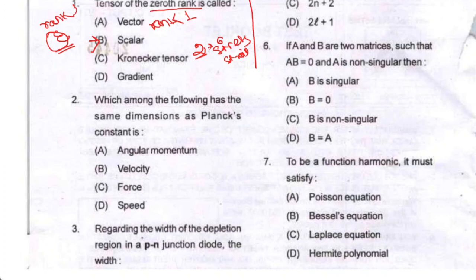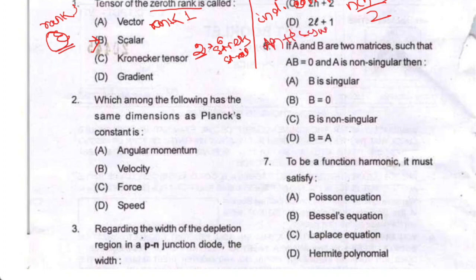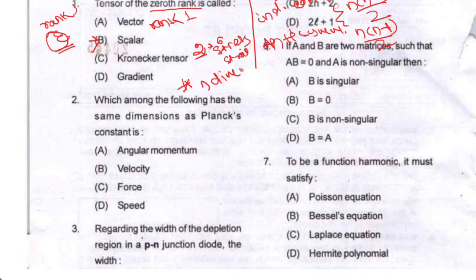For independent components of a symmetric tensor of n dimensions, the formula is n(n+1)/2. For an anti-symmetric tensor, it is n(n−1)/2. This is a very important concept. For a general n-dimensional tensor of rank r, the total number of components is n to the power r.